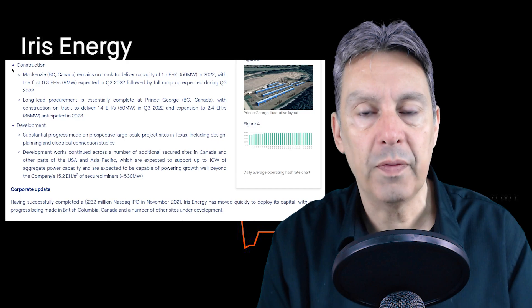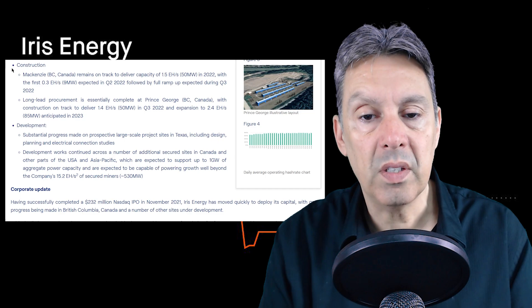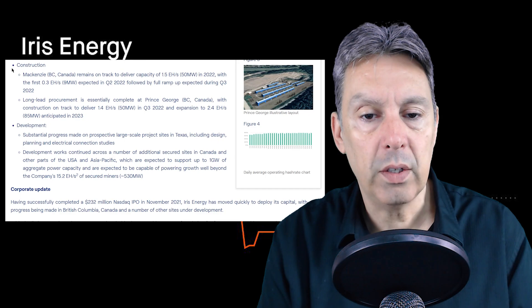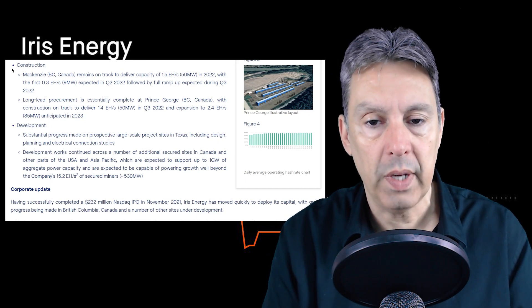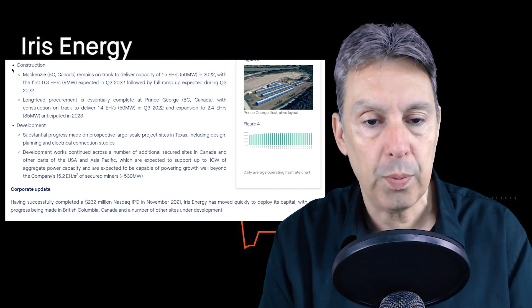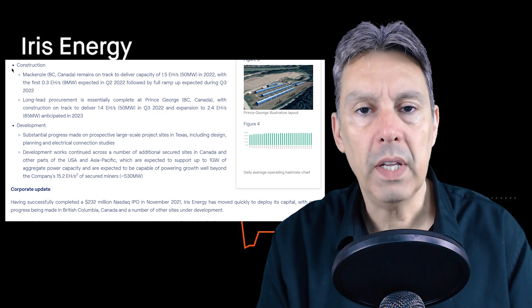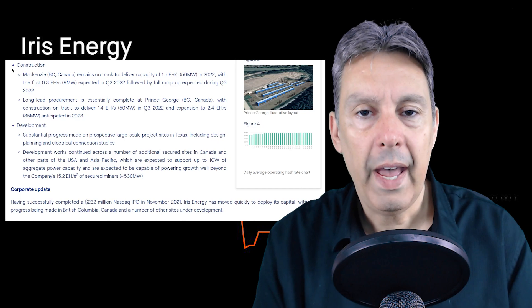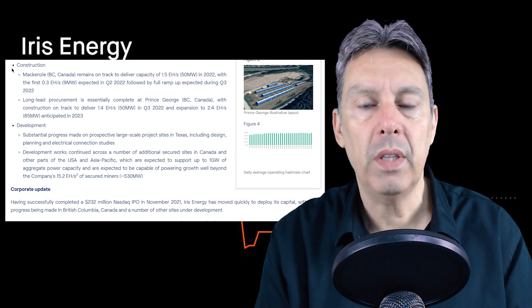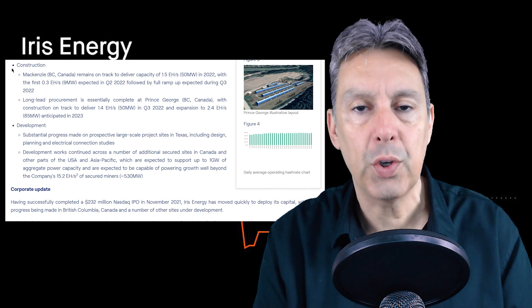Then they say long lead procurement is essentially complete at Prince George facility, with construction on track to deliver 1.4 exahash per second in Q3 of 2022, and expansion to 2.4 exahash per second. What you'll see later when we look at their detailed plans is they will be fairly maxed out for the next two years as they build facilities to accommodate the machines they've already ordered. There's a critical path here from a timing standpoint that they're going to have to stay on track with their construction in order to have the machines that they've bought up and running and operational, which obviously is crucial. You do not want to have idle machines.